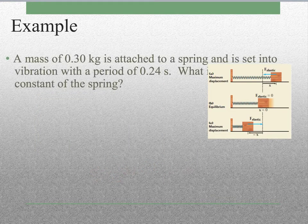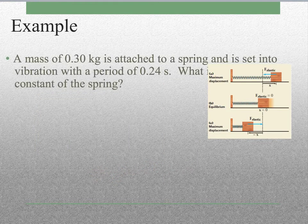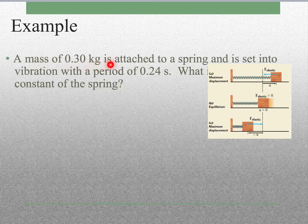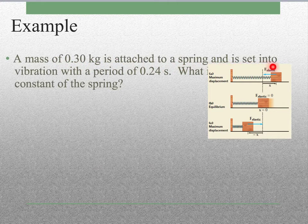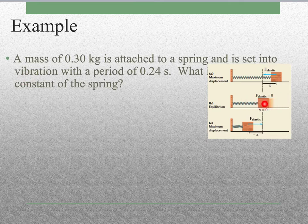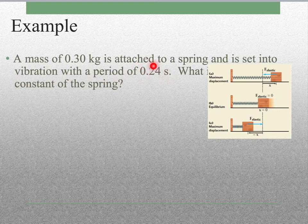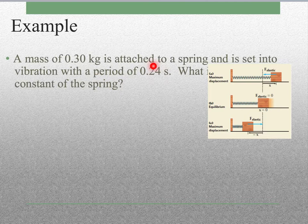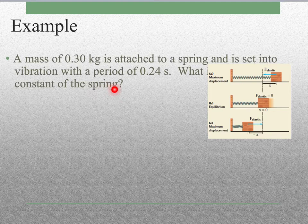Looking at our example now, we have a mass of 0.3 kilograms attached to a spring and set into vibration - remember, that means to go back and forth like this - with a period of 0.24 seconds. It looks like the picture got moved, sorry about that. But it says, what is the spring constant of the spring? So we're finding k.